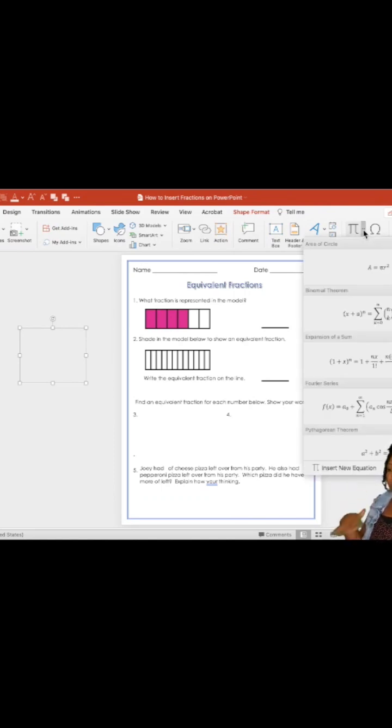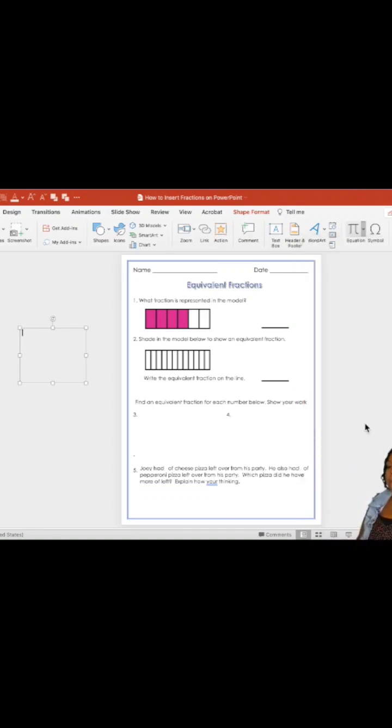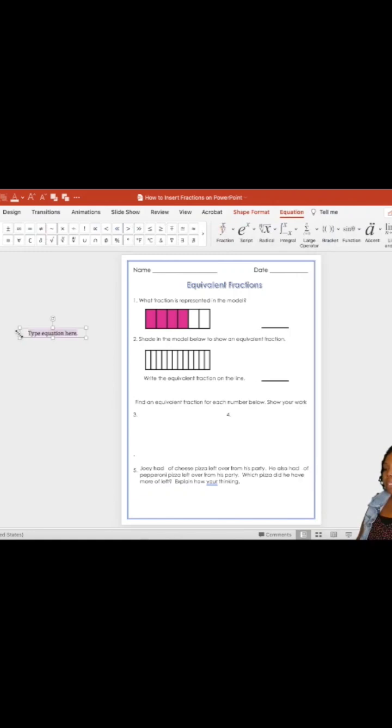That drop down menu—I'm using a Mac, and if you are using Windows, you should have an Insert tab as well for inserting equations. Just find Insert and drop down to Equations. So I'm going to go all the way down to Insert New Equation. Then immediately it says 'type equation here,' it's highlighted—don't click away yet.